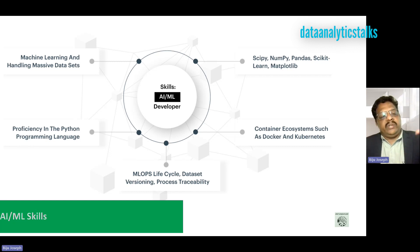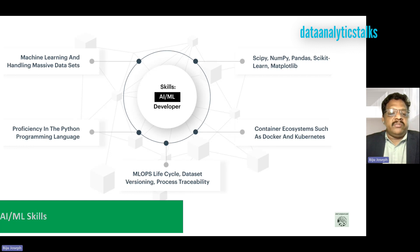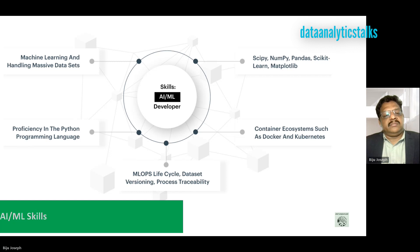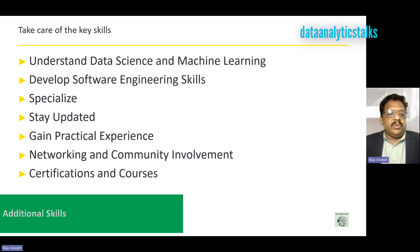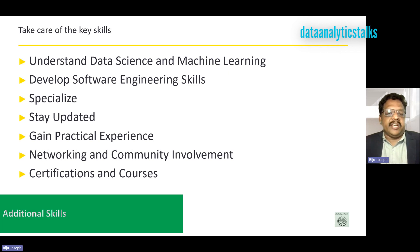When you do your education, try to learn Python and have a strong base in it. You should also have familiarity with a container ecosystem such as Docker and Kubernetes. When it comes to the process flow, knowledge of MLOps lifecycle, dataset versioning, processes, and traceability are recommended. As key skills while aspiring or pursuing your career, try to understand data science and machine learning thoroughly, and develop software engineering skills — including understanding the software development life cycle, version control with Git, and writing clean, maintainable code.